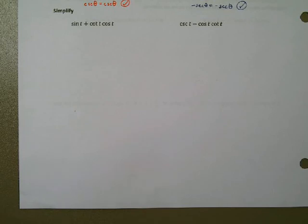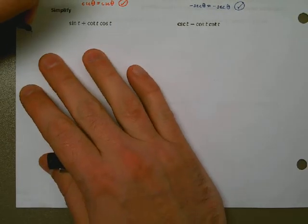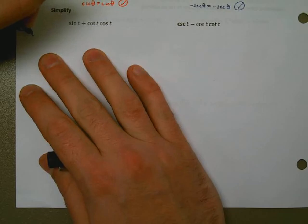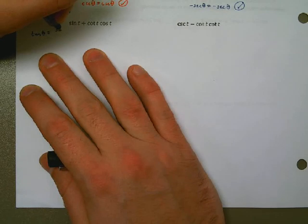This is important because now I can rewrite this expression with the cotangent replaced. Instead, I'm going to write sine of t — t is our angle — plus cosine over sine, there replacing cotangent, times cosine.